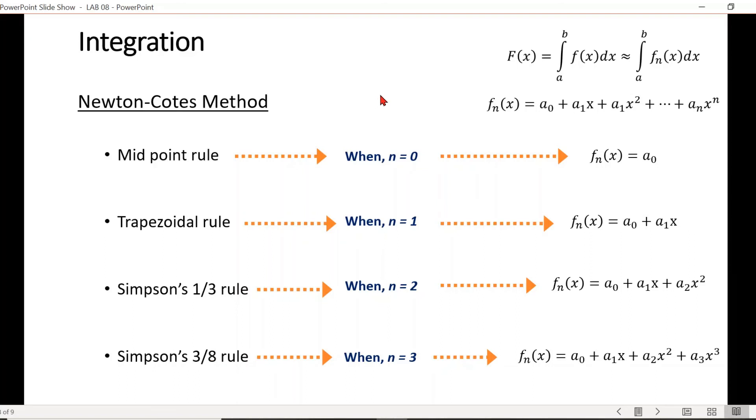Here let's assume that we are integrating a function f of x in the interval a to b, where the function is considered as nth order polynomial. And according to the power of this polynomial function, we end up with different integration methods. For example, when the power n is zero, we only have the first term of the polynomial that actually represents the midpoint rule.